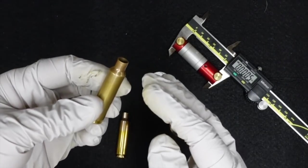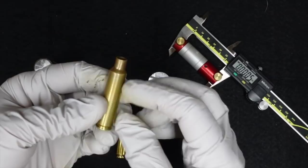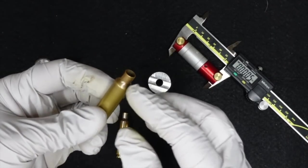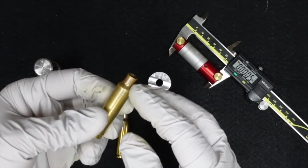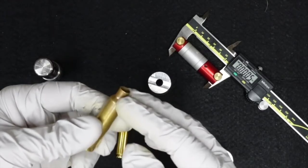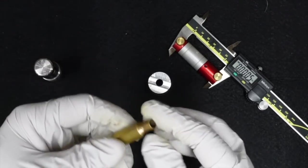If you push your shoulders too much, you risk fatiguing the brass and getting case head separations. If you're not bumping your shoulders enough, you're going to get hard bolt closures and some other problems there. So you really want to make sure you're doing it correctly.